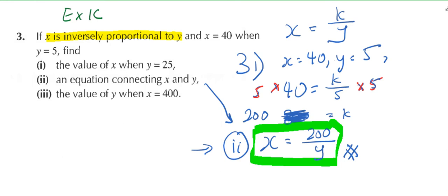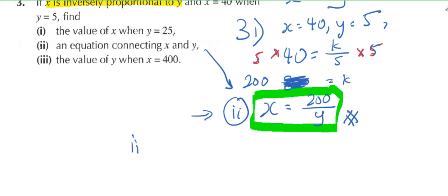Now I go to part three. Part three you can automatically do. Now let's try. X is 400, so what does it mean? 400 equals 200 over Y, when X equals 400.